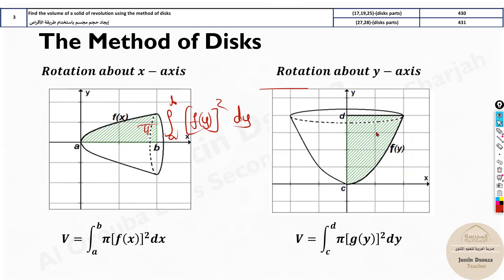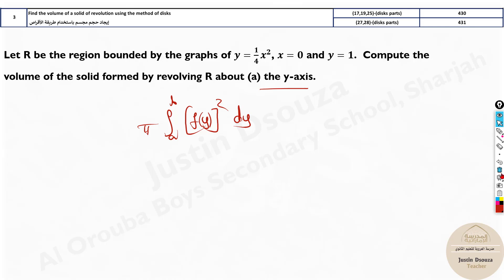Let's go back to the previous page where the formulas are. You can see that's the formula — pi is written outside the integral because it's a constant. Whatever your figure will be, when you rotate along the y-axis, the graph comes to the left side. If it's along the x-axis, it goes down. We take the positive sides.